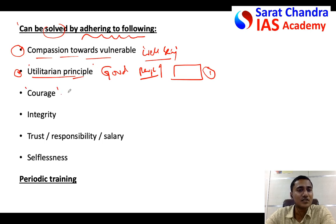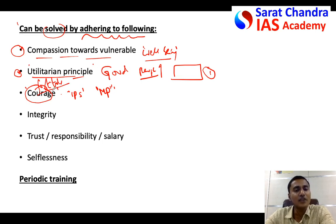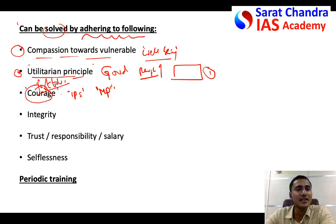Sometimes following ethical conduct requires courage — or rather, fortitude. You can cite the example of IPS Narendra Kumar Singh, who worked against the mining mafia of Madhya Pradesh and risked his life to bring them to justice. Fortitude means moral courage — not just how fearless you are, but how long you can maintain your courage in spite of threats from powerful people. Unwavering moral courage is called fortitude.